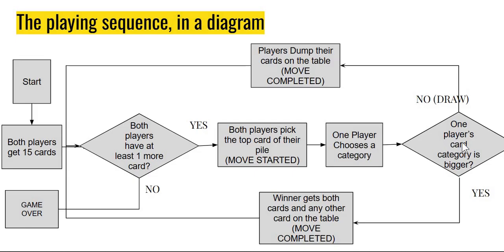Now we come to make a decision: is there a clear winner? Maybe one category value is bigger or smaller between the two cards. If there is a clear winner for this category, then the move is completed — the winner gets both the cards, and we go back to the same point and ask again: is there at least one card with both the players?